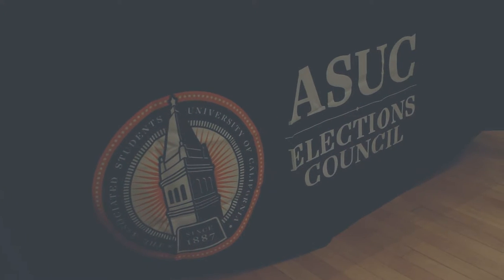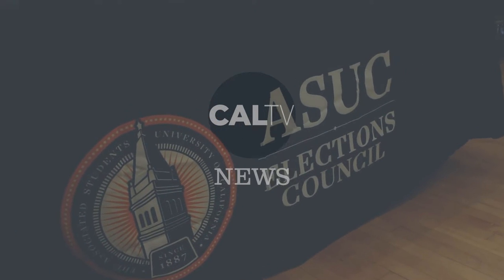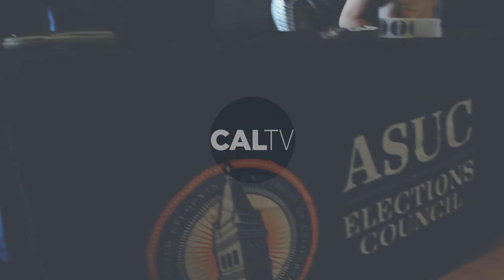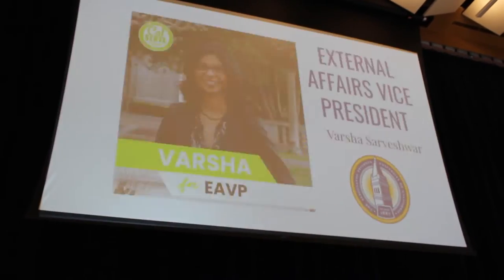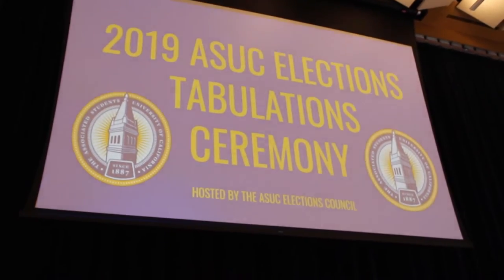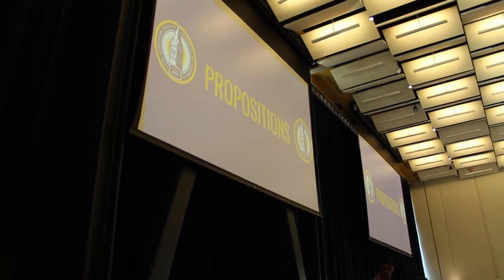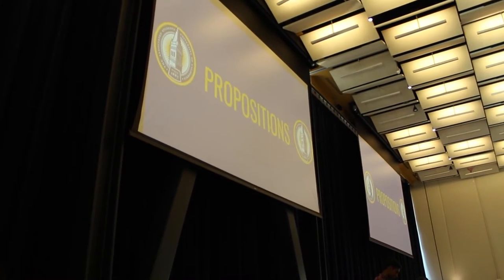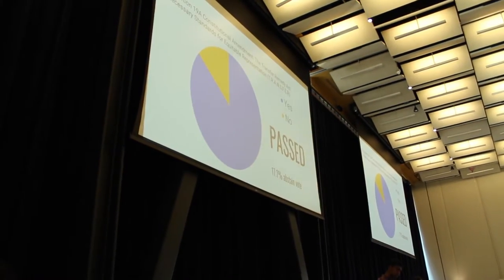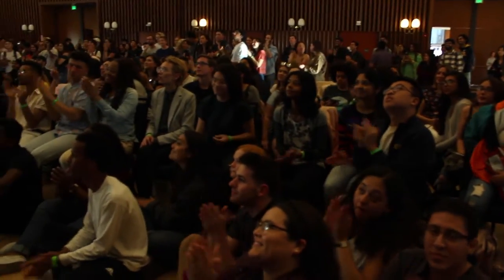In the week of April 8th, Berkeley students voted on and passed the Transfer Remedy Act, along with the general ASUC elections. The Transfer Act, named as Necessary Standards for Equitable Representation, addresses how the ASUC Senate and executive bodies are consistently composed of zero or one elected students who are transfers.